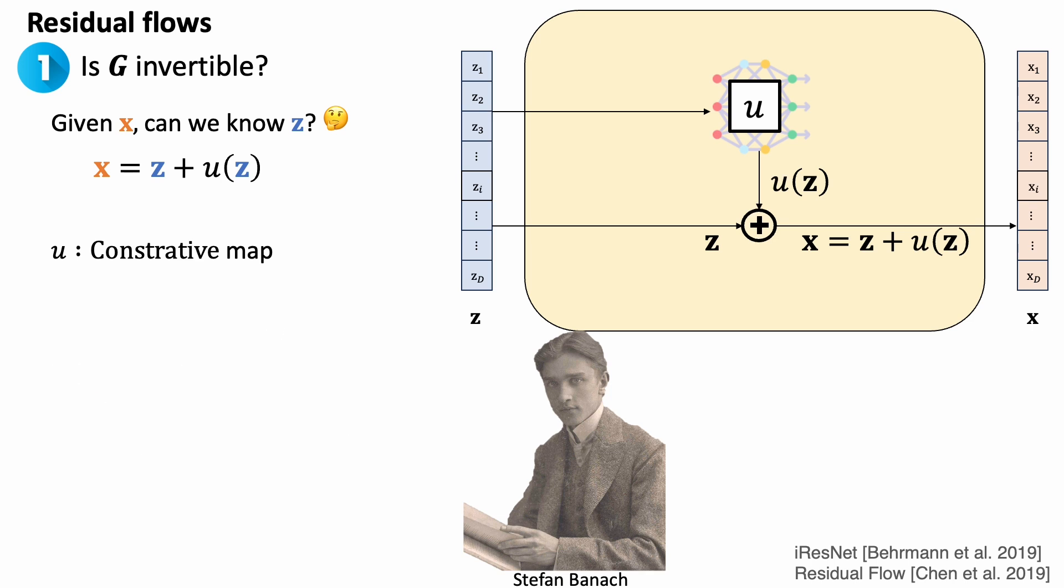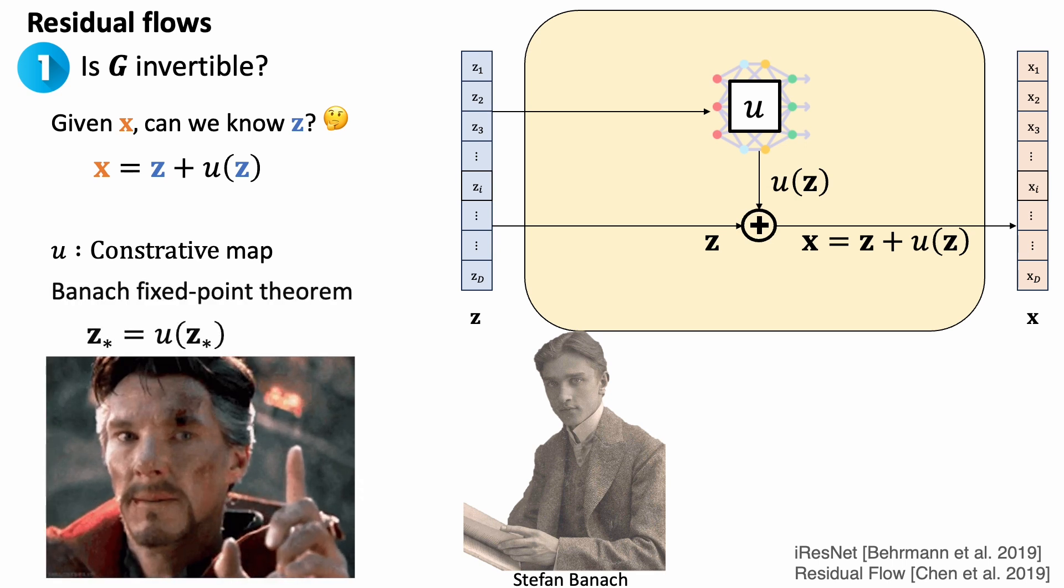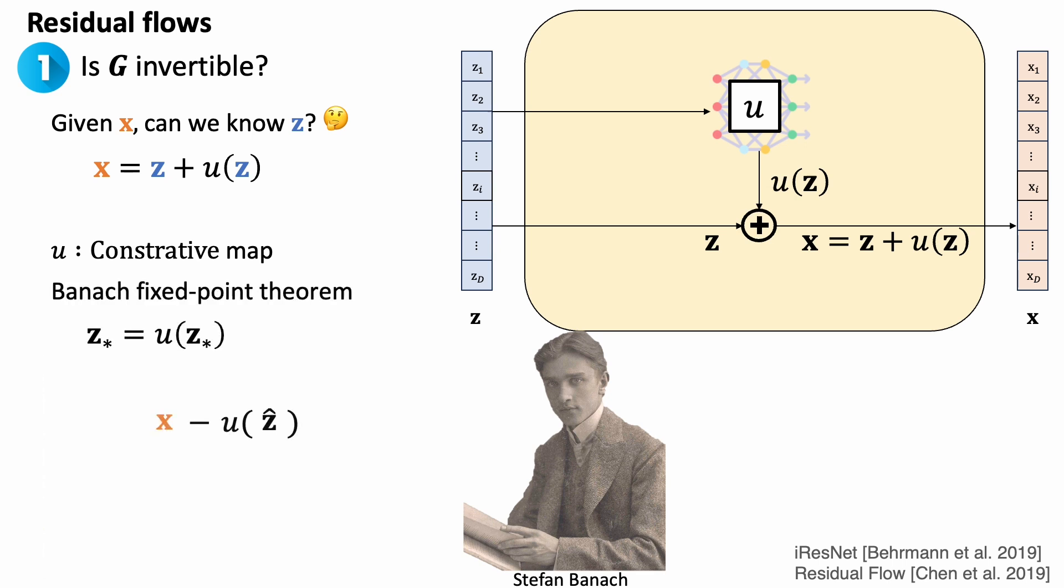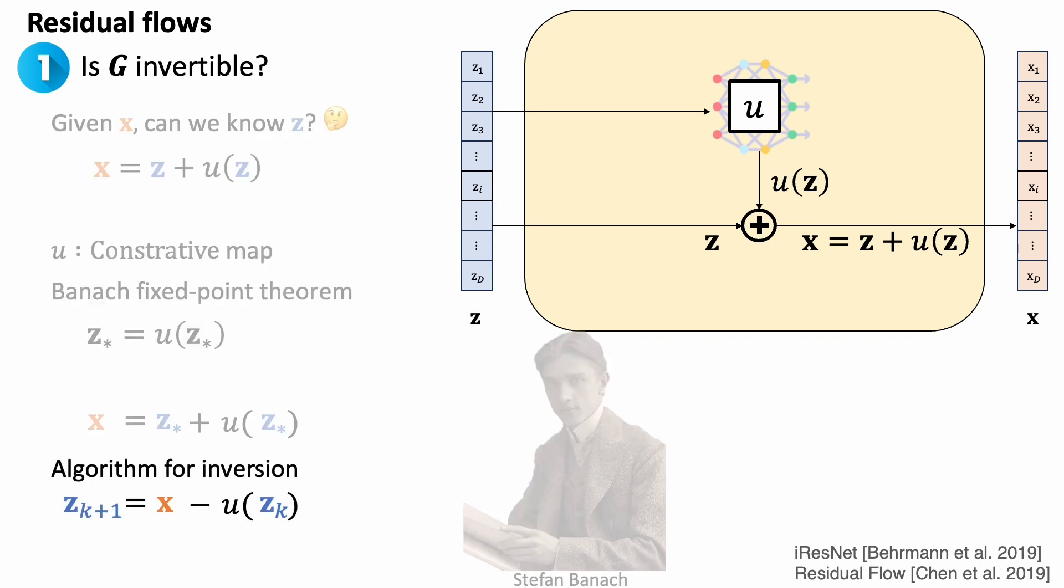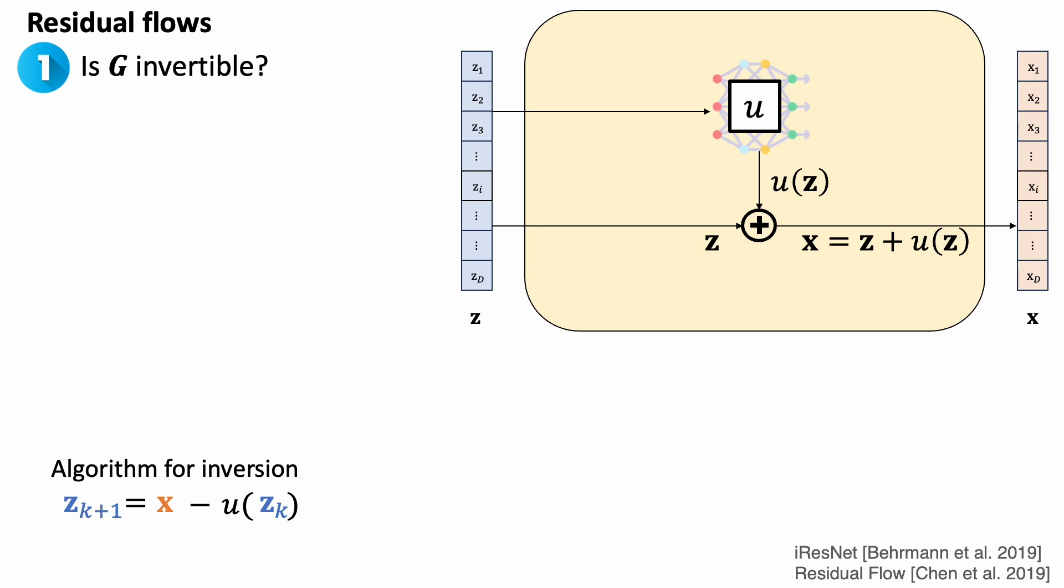If u is a contractive mapping, then there exists a unique fixed point z star. Let's use x minus u of z as our contractive map. Applying the fixed point theorem, we get this expression. By shuffling the equation a bit, we found that z star is what we want. Since z star is unique, we can revert this residual layer g. The theorem also gives us a bonus and shows us an iterative algorithm to find a unique z star.